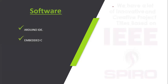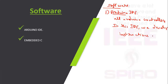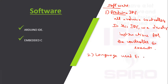The software used in our project is the Arduino IDE, which supports all Arduino controllers. In this IDE, we develop the instructions for the controller to execute. The programming language used is Embedded C — since we are using a microcontroller, it is referred to as Embedded C.